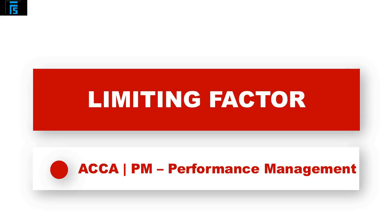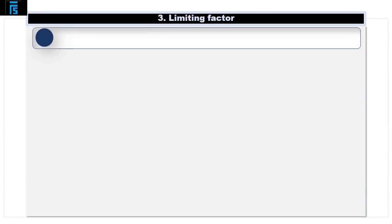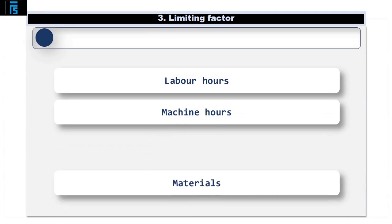You should note that some businesses may have other objectives rather than profit maximisation, but for the purposes of this video and this topic area, we are going to assume that profit is the main objective for any business. The main types of resources that could be scarce or limited are labour hours, machine hours or materials.